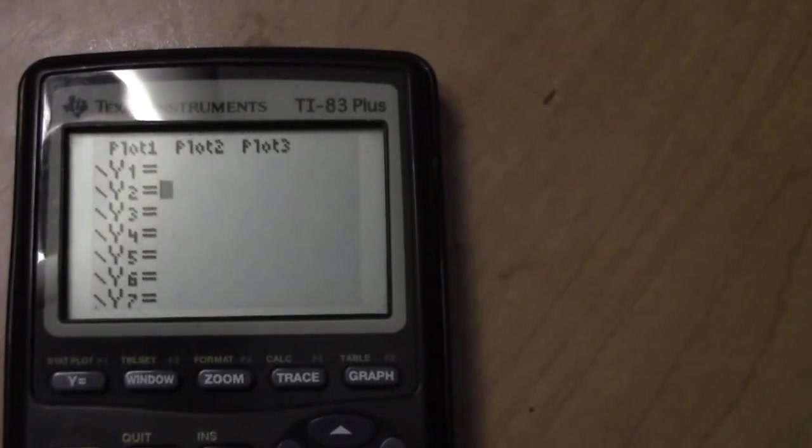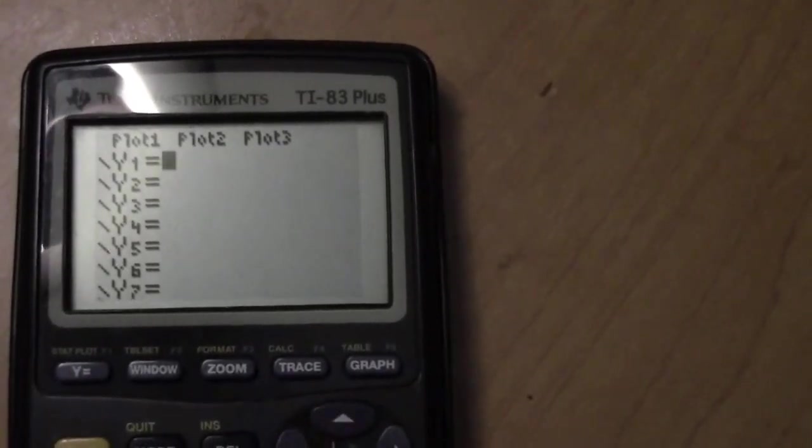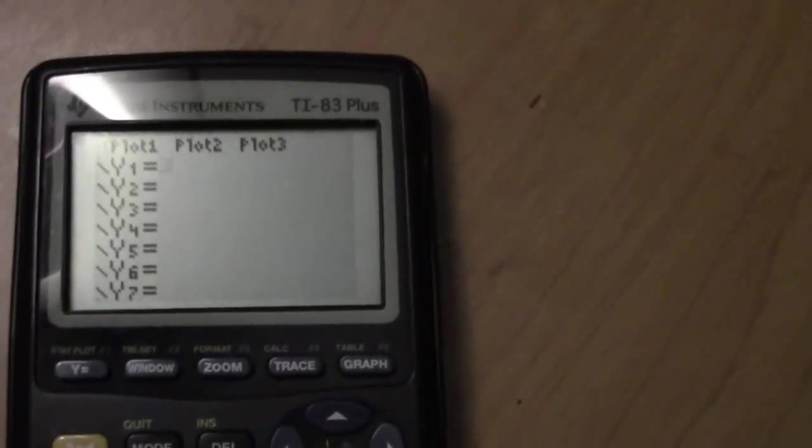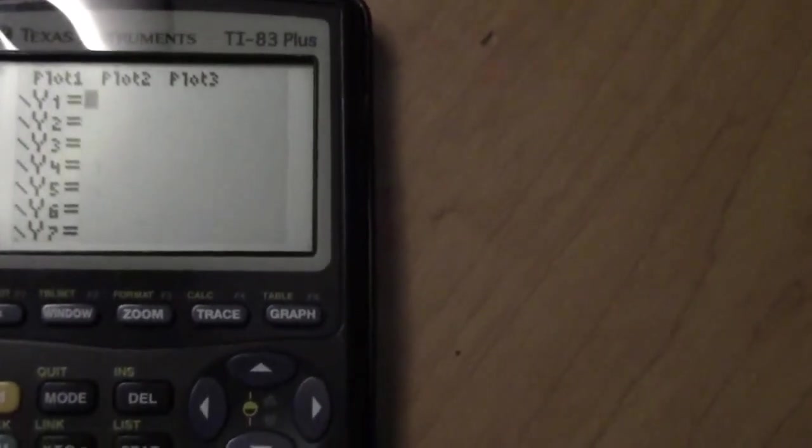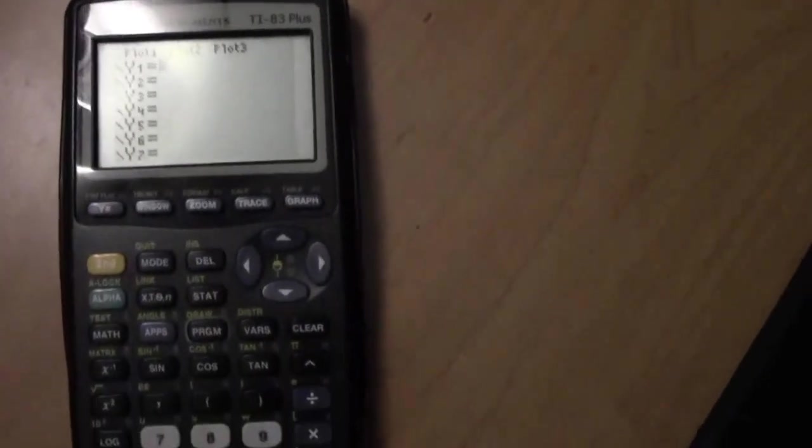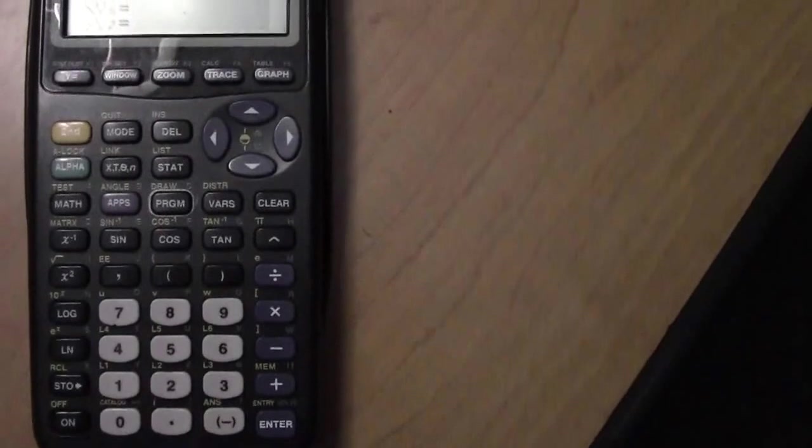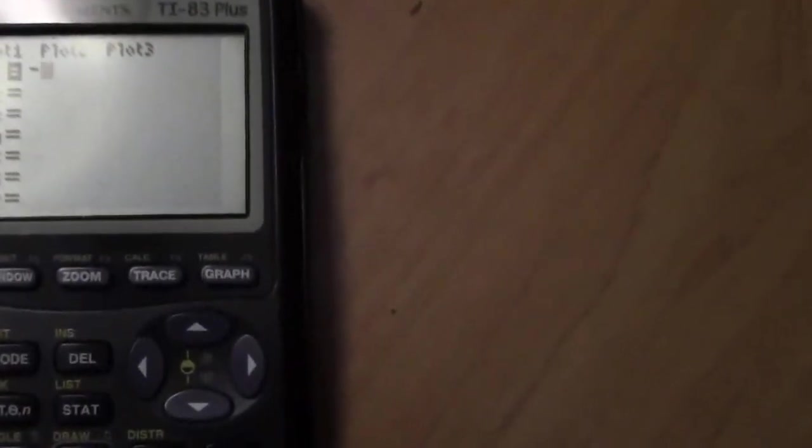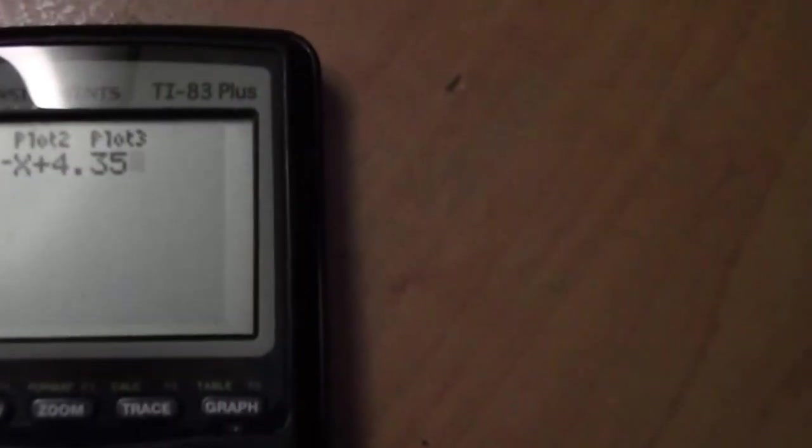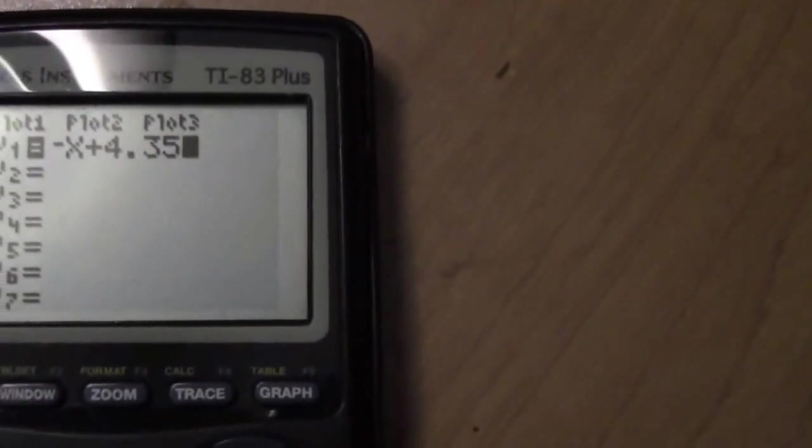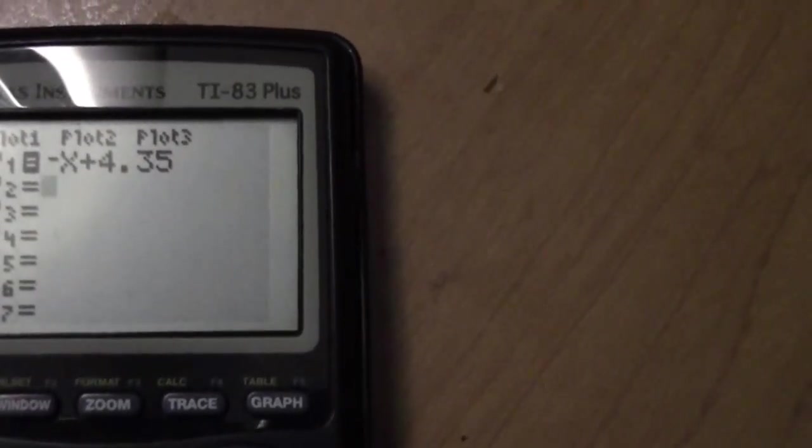The next thing you need to do is to enter the equations that are part of your system. So for example, if your first equation is y equals negative x plus 4.35, you would push your negative button. Then you need to find your x button, which is right here, x plus 4.35. And notice it's now on your screen in the location for y1 equals.